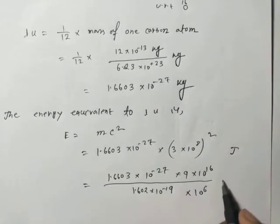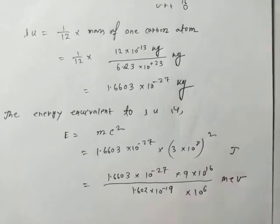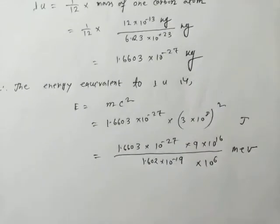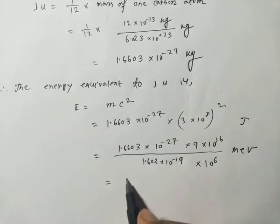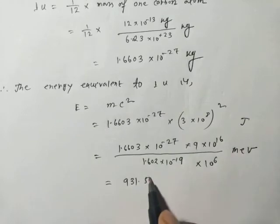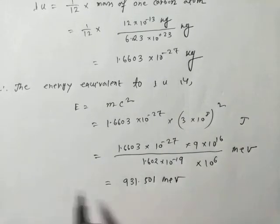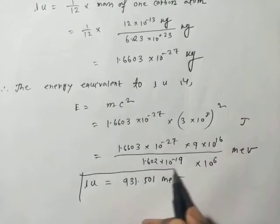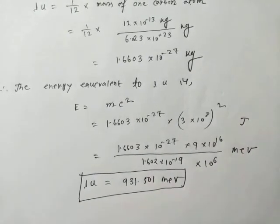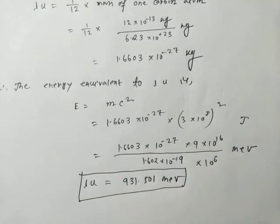This equals 931 mega electron volts. So this is the equivalent energy: one u equals 931 MeV in terms of energy.